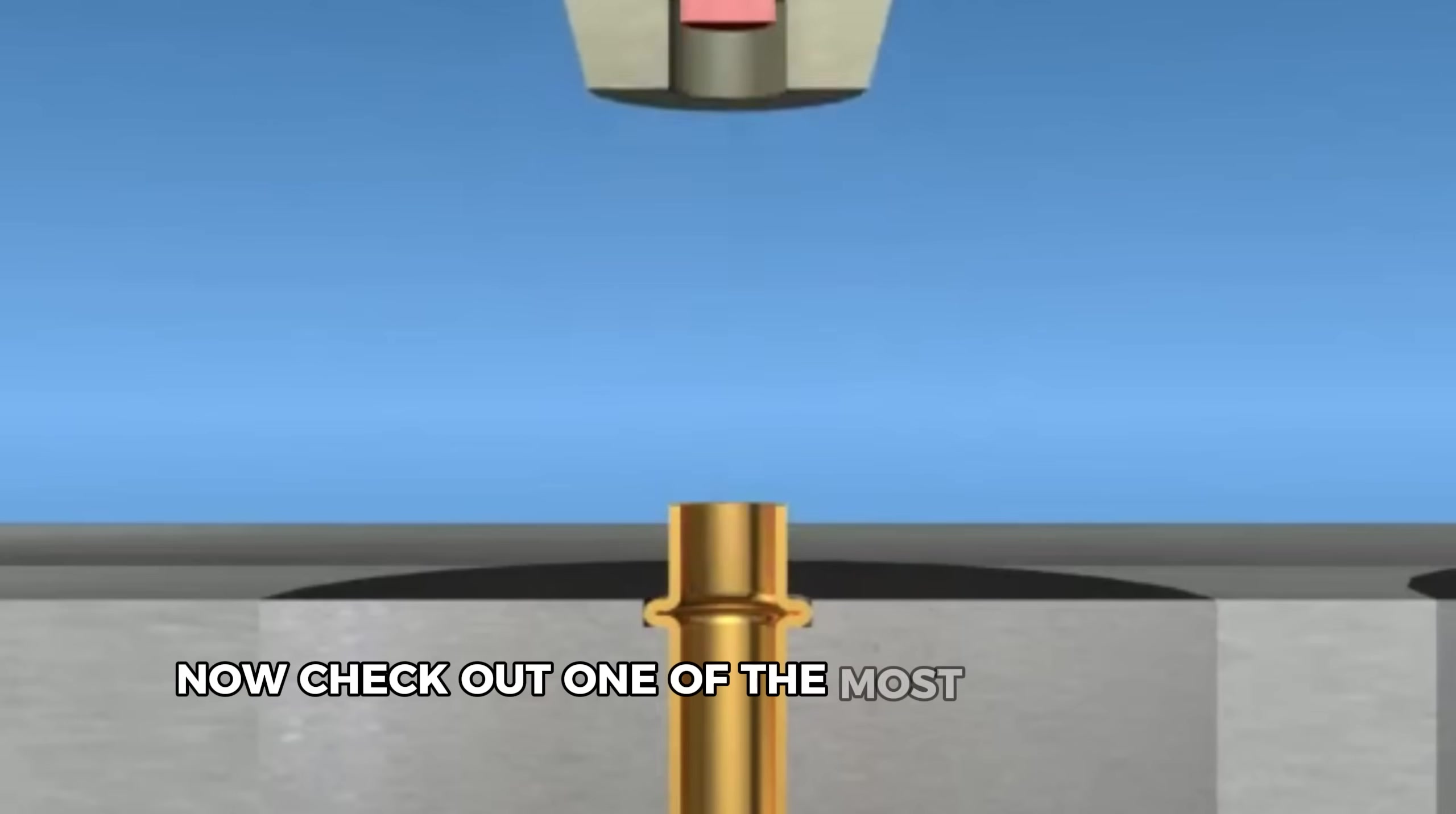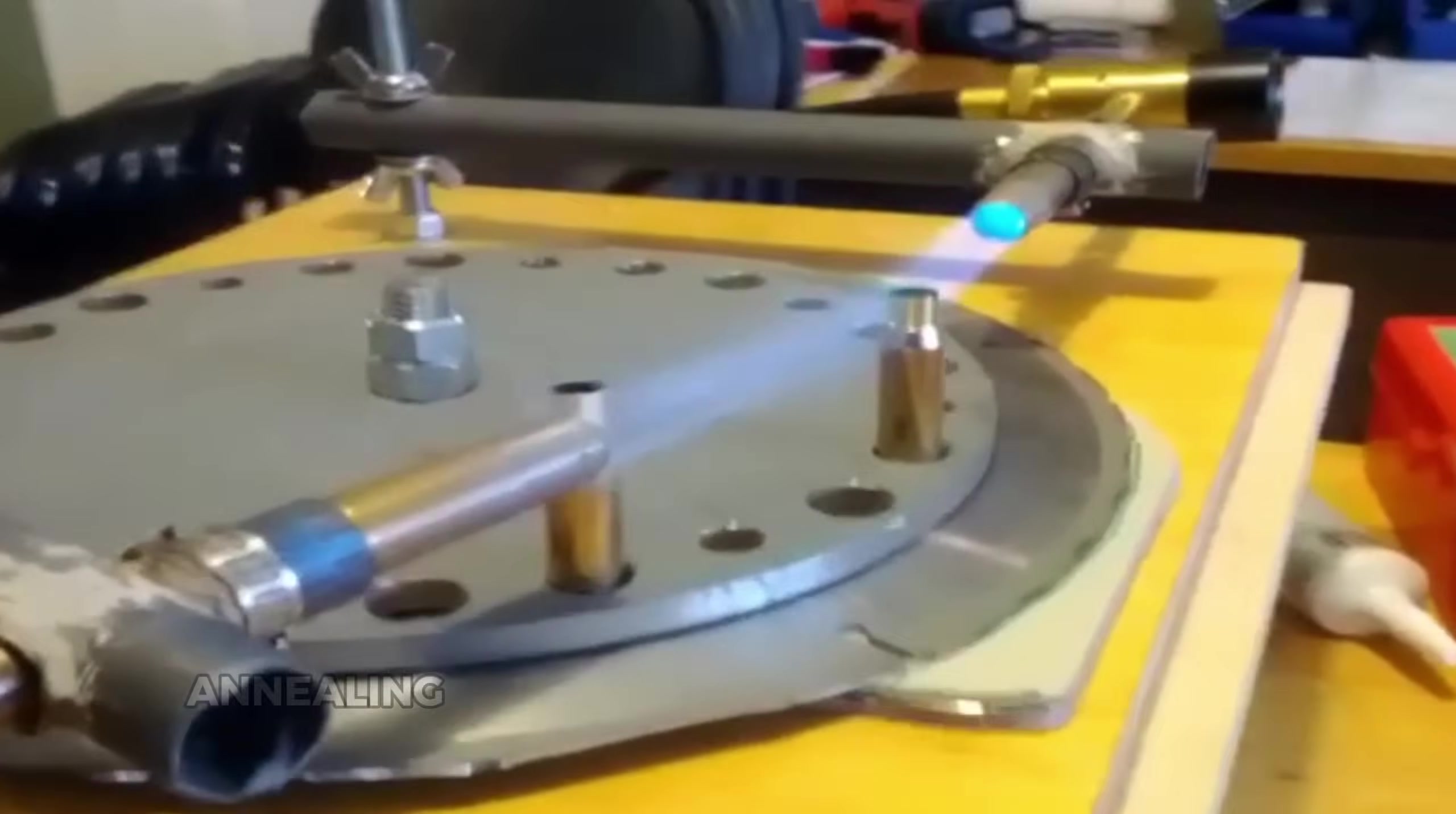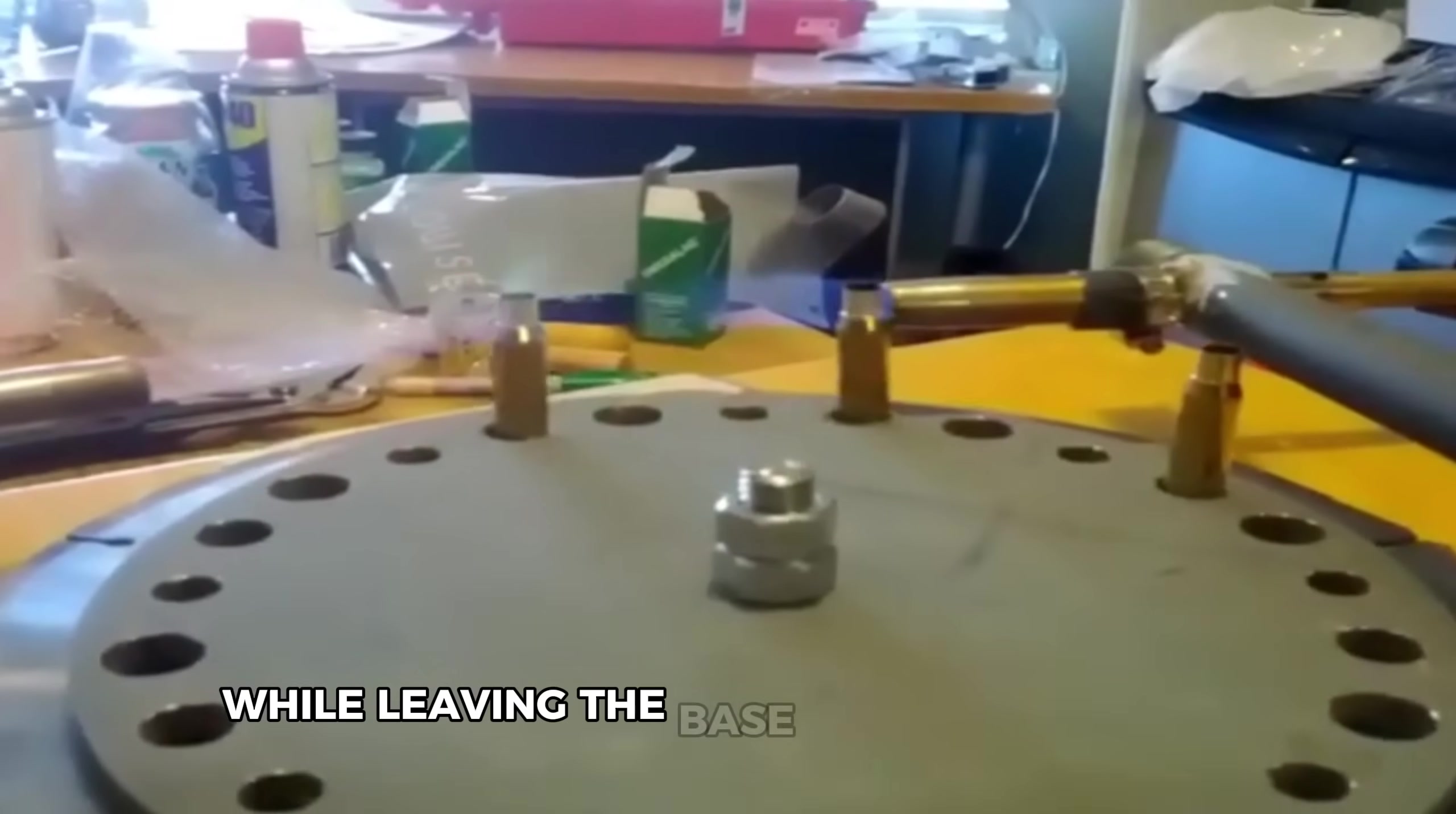Now check out one of the most fascinating steps: annealing. Here, metallurgy transforms into something almost magical. The neck and mouth of each case need to be softer than the base, so workers carefully heat only those specific areas. Annealing requires absolute temperature control. Too cool, and the metal won't soften properly. Too hot, and the case loses structural integrity. Specialized equipment heats just the neck and mouth areas to precise temperatures while leaving the base strong and hard.